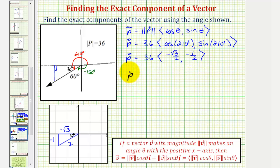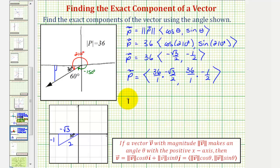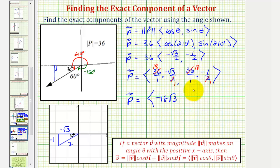So vector p equals 36 times the vector with x-component of cosine 210° = negative square root of three over two, and y-component of sine 210° = negative one-half. Performing the scalar multiplication and simplifying — there's a common factor of two between 2 and 36, giving us 18 — the x-component becomes 18 times negative square root of three, or negative 18 square root of three, and the y-component becomes 18 times negative one, or negative 18. This is the component form of vector p.